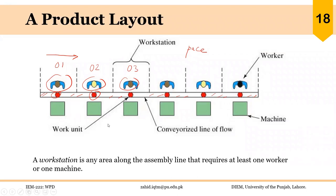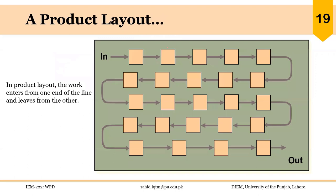A workstation is any area along the assembly line that requires at least one worker or one machine. The time at each workstation should be very similar to the time at other workstations — that is the goal of line balancing. It is not necessary that operations are arranged in a straight line; product enters from one end and exits from the other with no backtracking. That is the basic concept of a product layout.